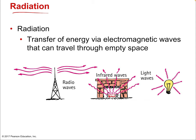Now the third type of heat flow: radiation. Radiation is a transfer of energy via electromagnetic waves that can travel through empty space. Unlike conduction (which required contact) and convection (which requires fluids), radiation doesn't require either — it just spreads on its own.